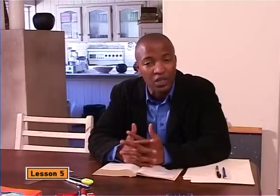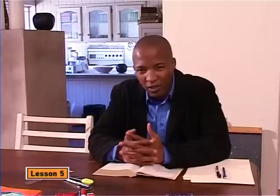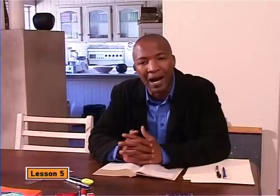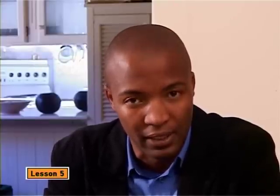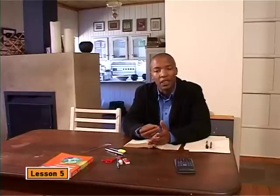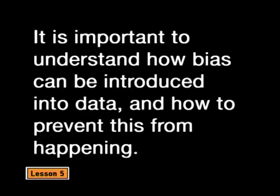People often use statistics in a way that supports their own point of view and does not present the full picture of the situation. When they do this, we say that they are introducing bias into the data. When people present or interpret data in a biased way to achieve a particular purpose, we say that they are manipulating data. Data can be manipulated when it is collected and when it is represented graphically. Remember, the aim of collecting and representing data is to provide information about the true situation, so it's important to understand how bias can be introduced into the data and how to prevent this from happening.